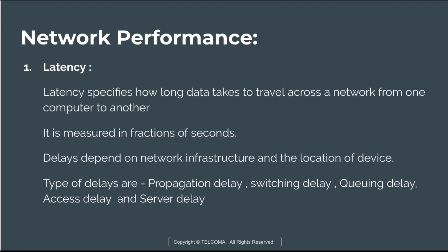Latency specifies how long data takes to travel across a network from one computer to another. It is measured in fractions of a second, and delay depends upon the network infrastructure and the location of the device. The types of delays are propagation delay, switching delay, queuing delay, access delay, and server delay.